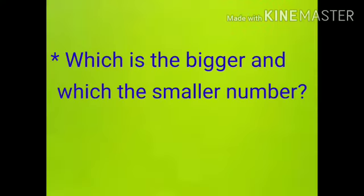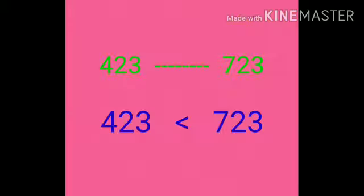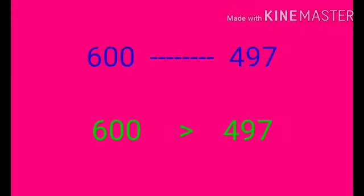Which is the bigger and which is the smaller number? First example: 721 box 589. The answer is 721 greater than 589. Second example: 423 box 723. The answer is 723 greater than 423. Third example: 600 box 497. The answer is 600 greater than 497.